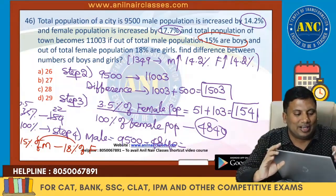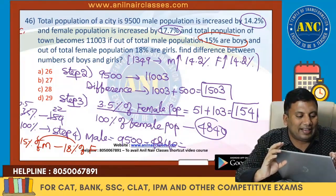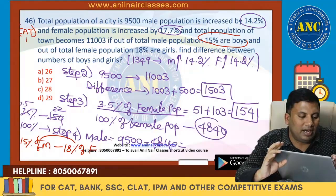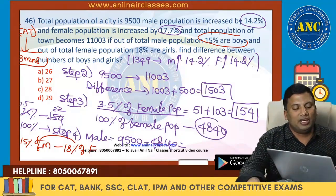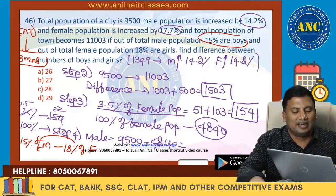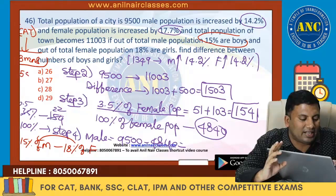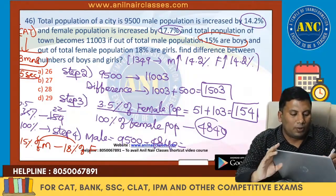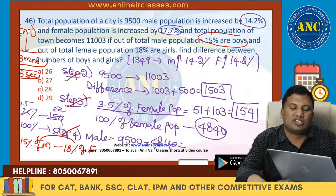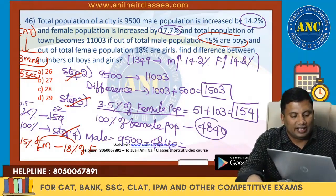Actually this question is a CAT exam question. Many students said that it is very calculation-intensive. You can solve it, but minimum 3 minutes it takes. Actually for me it takes 5 seconds to solve the question if you read the question carefully. I hope step 1, step 2, step 3, step 4 — it is clear.